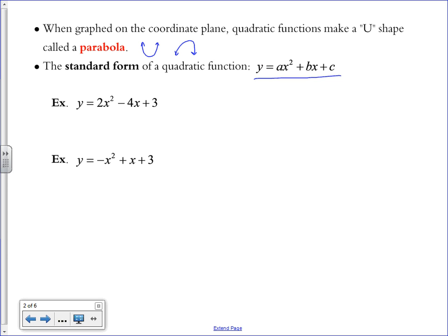These are two examples of quadratic functions. It's important to establish two things about quadratic functions before we learn how to graph them. In standard form, A is the coefficient of x squared. So here, the A is 2. B is the coefficient of the x. So here, B is negative 4. And C is the constant term, which here is positive 3.